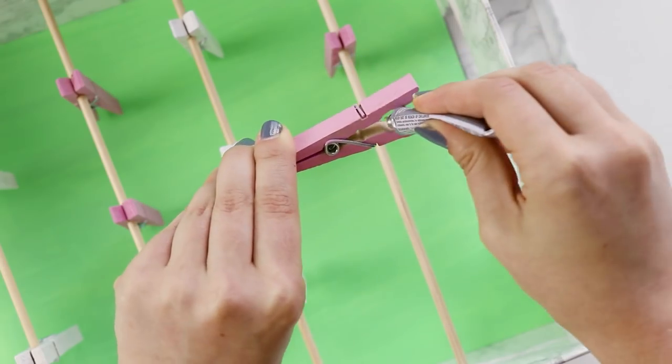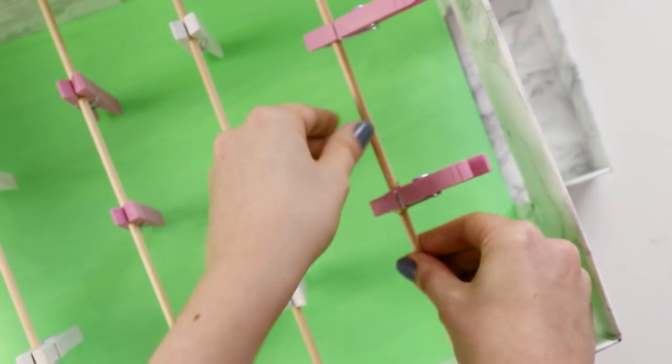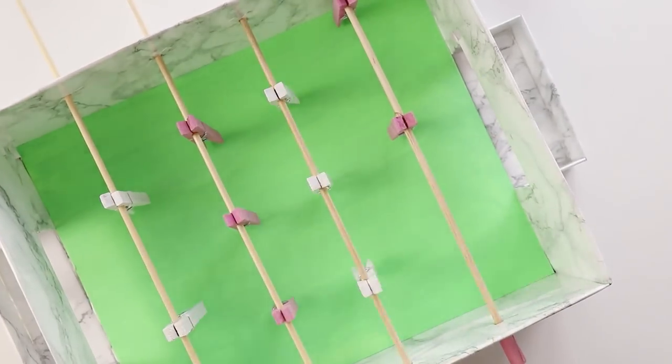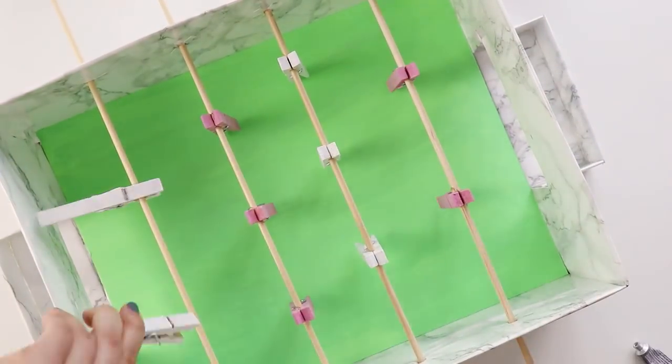Now for one final step, take each clothespin off of the dowel and use super glue to glue it into place. This will ensure that they don't spin or move around when you're actually playing the game.